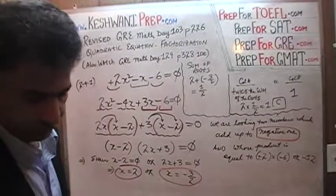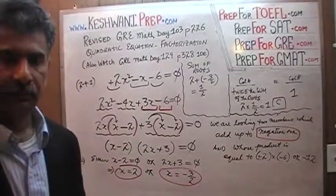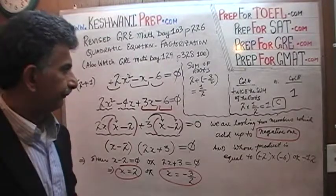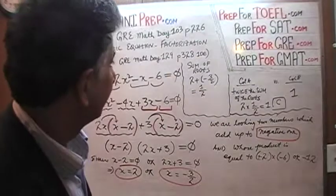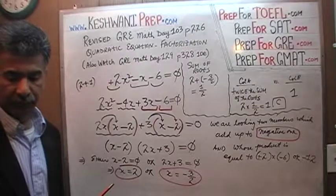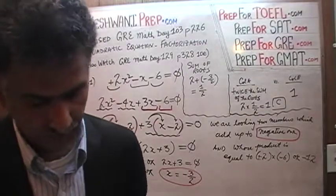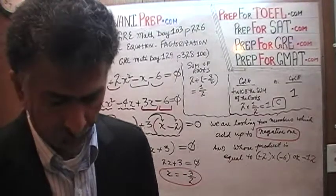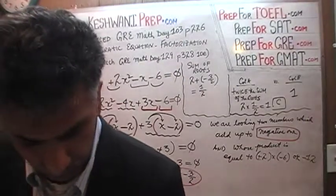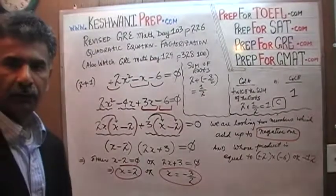That was the end of the solution. This is a fairly complicated problem — it will appear as a hard question on the GRE, not easy or medium. I'm done with the concept of factorization, which we worked on for the last three days: lessons 101, 102, and 103. Tomorrow we'll do the problems on the next page about inequalities on page 228. See you tomorrow — bye!